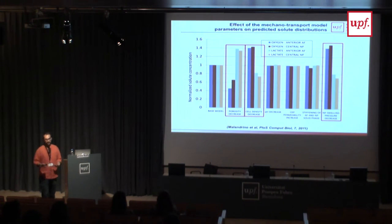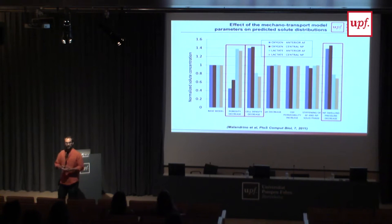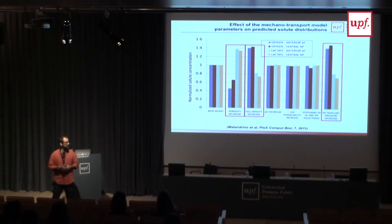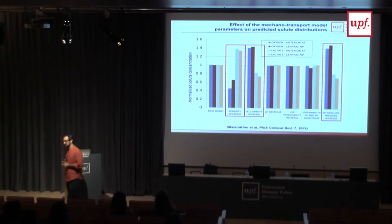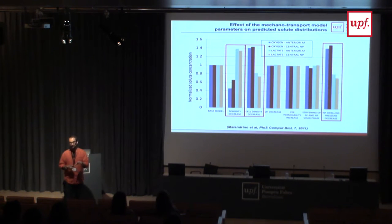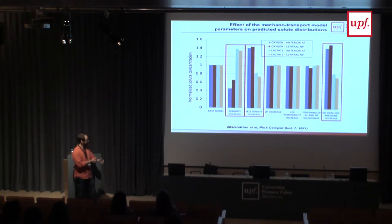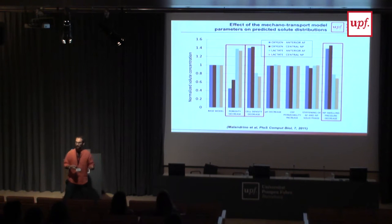This is a rather complex model and difficult to validate because controlled evidences in vivo are hard to obtain. So we performed sensitivity analysis — checking which parameters most influence our predictions — and found that porosity and swelling pressure mostly affected solute distribution under mechanical loading, as well as cell density. The next step was to further refine the osmo-poro-hyperelastic model.